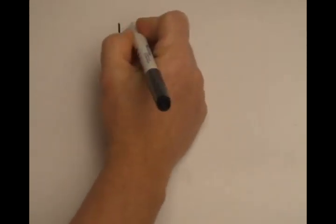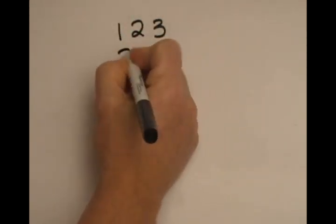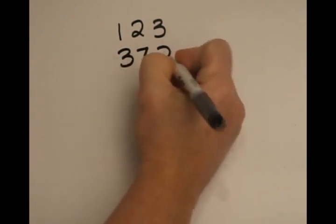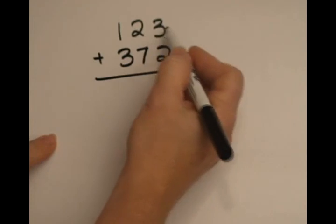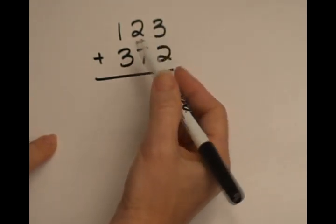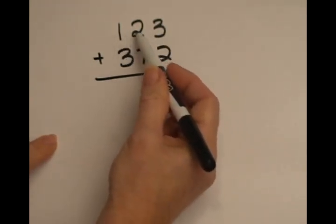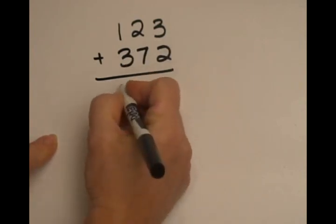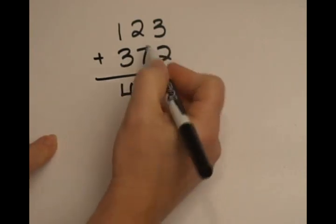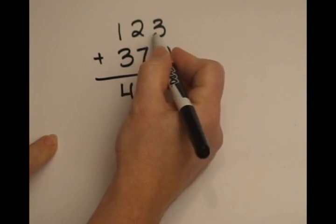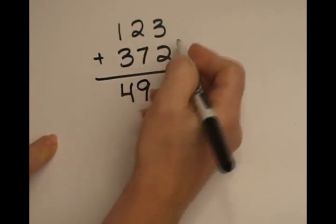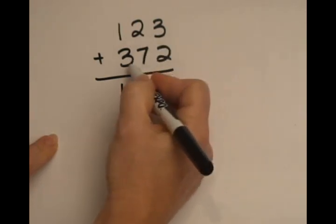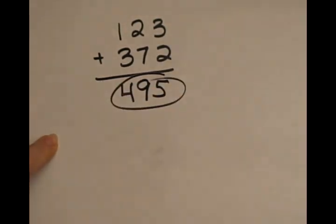Suppose we're going to add the numbers 123 and 372. I'm going to add these in my head. So 123 plus 372. I can already see that 100 and something and 300 and something is going to give me roughly 400. 123 plus 372, that's going to give me a 9. 123 plus 372, and the answer is 495.